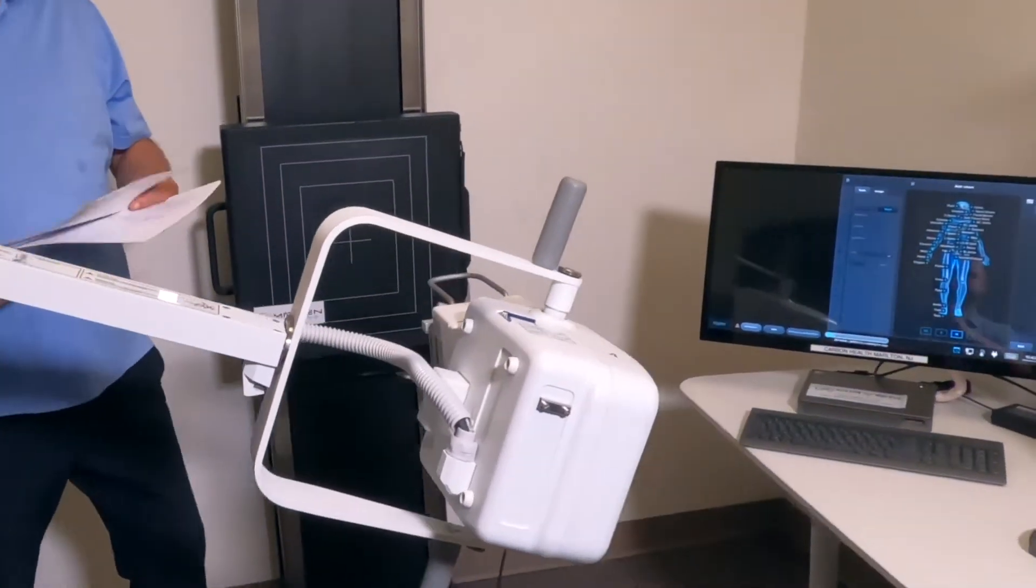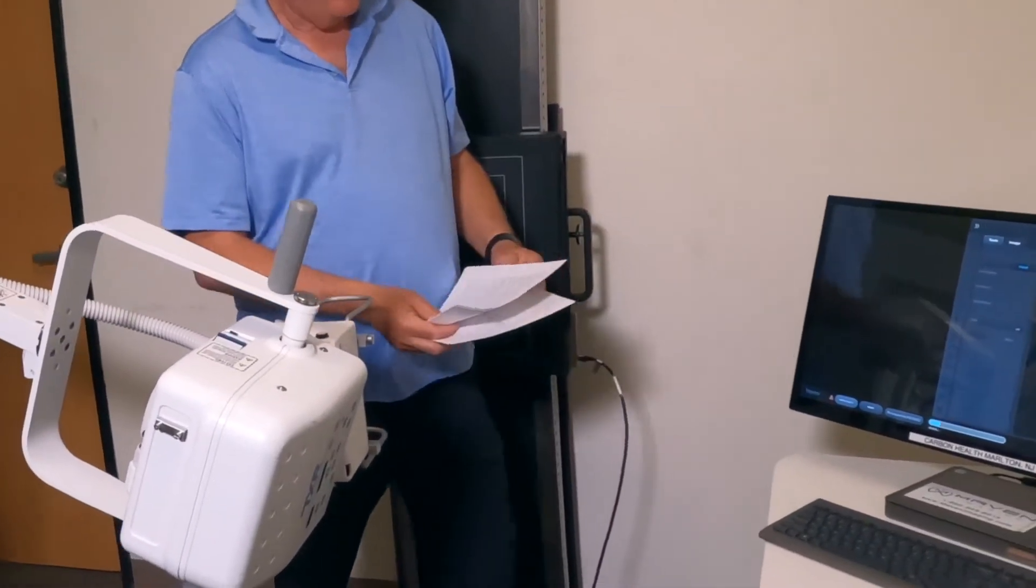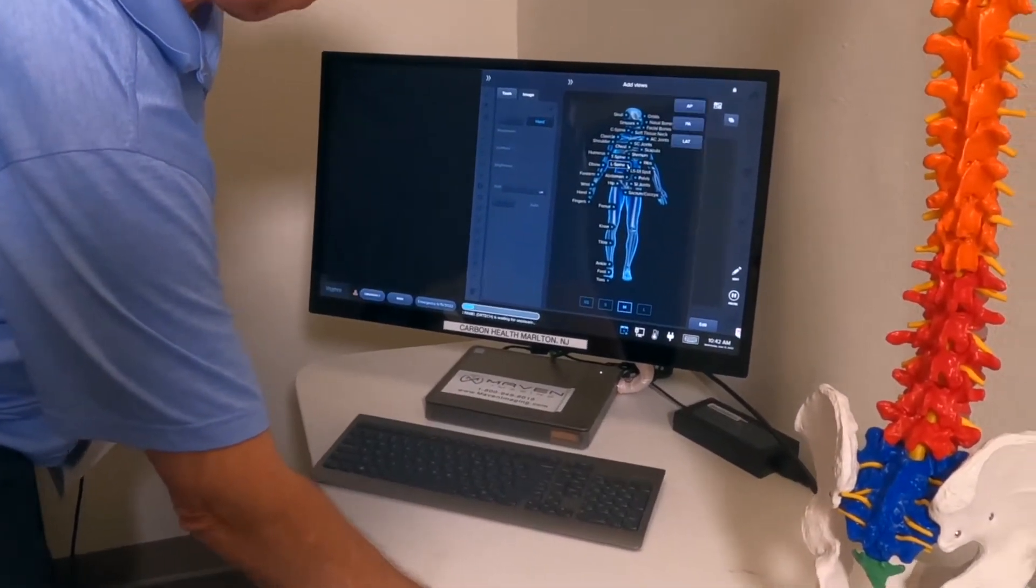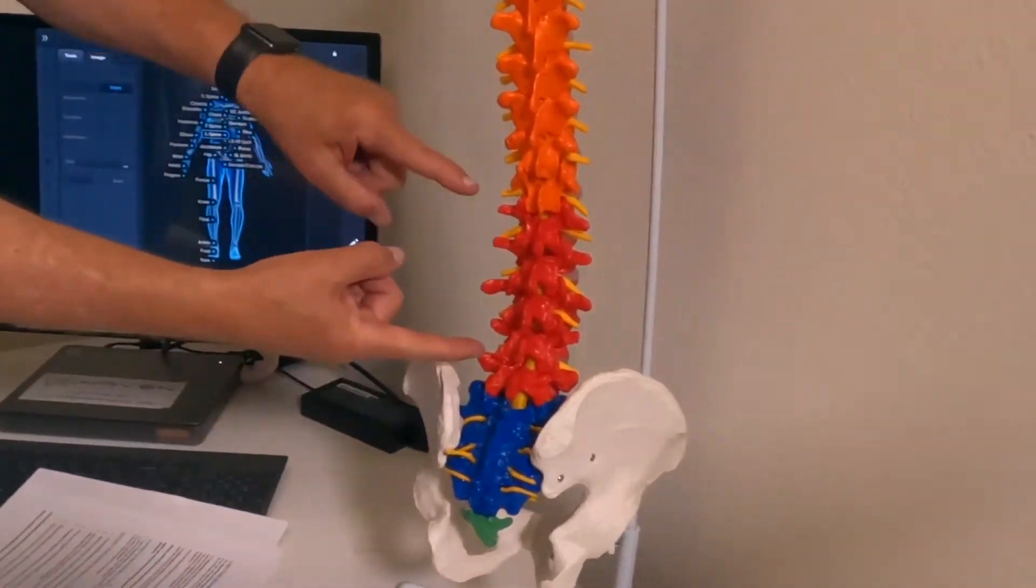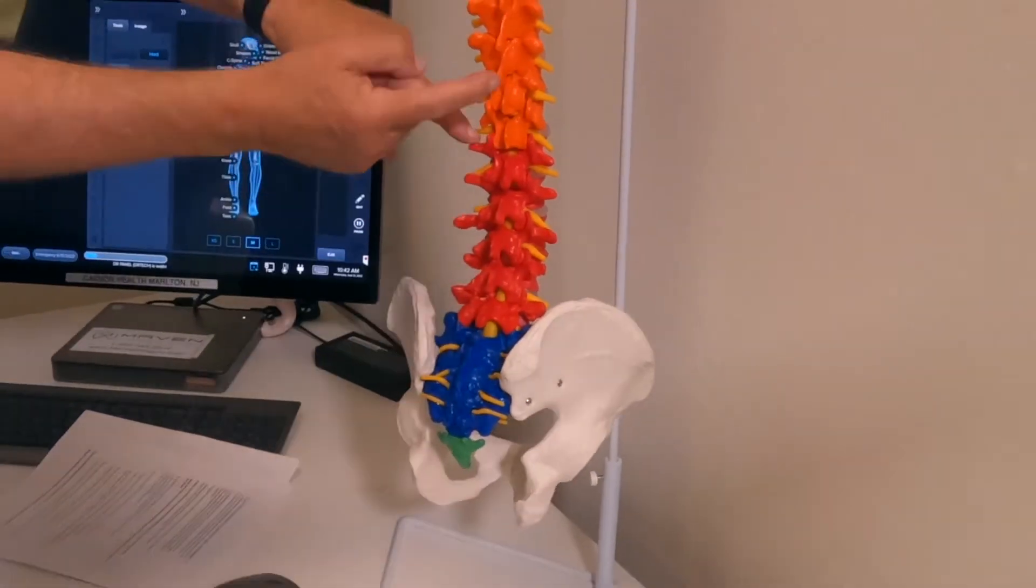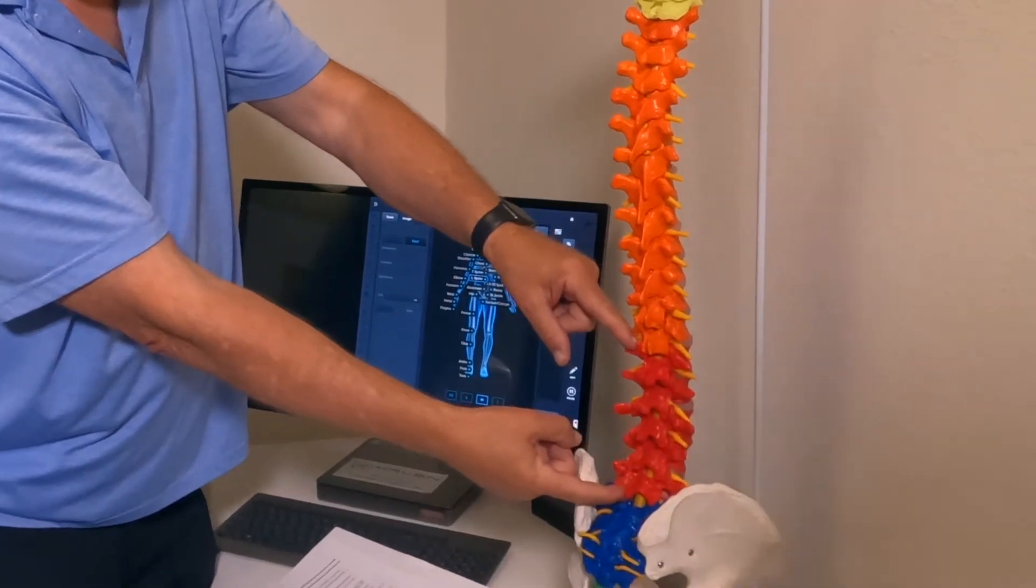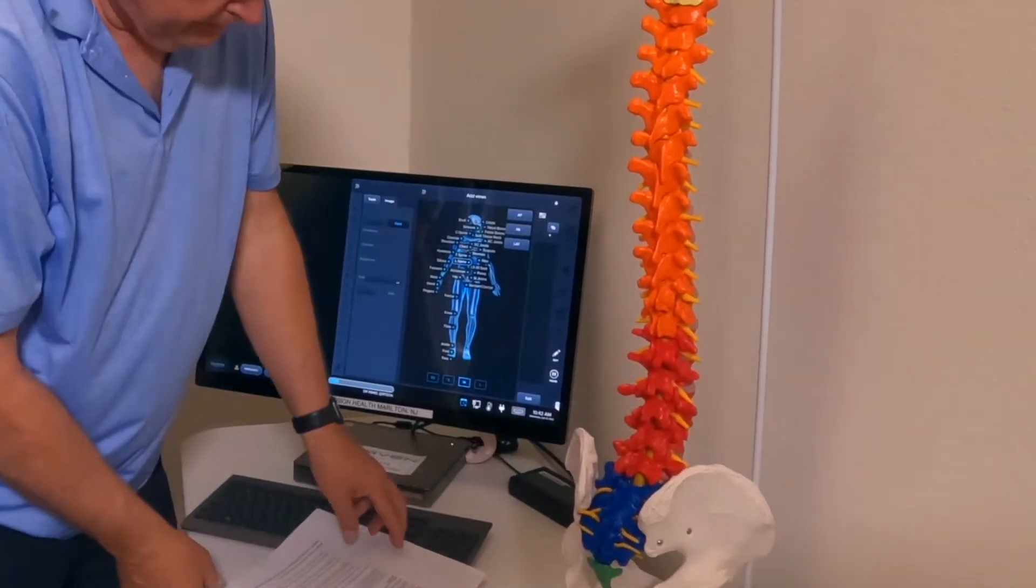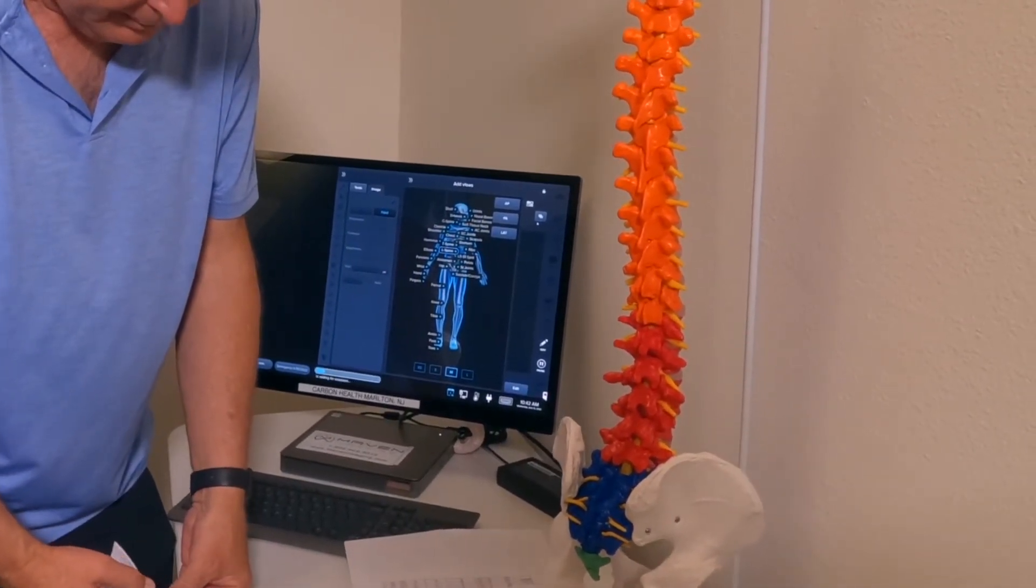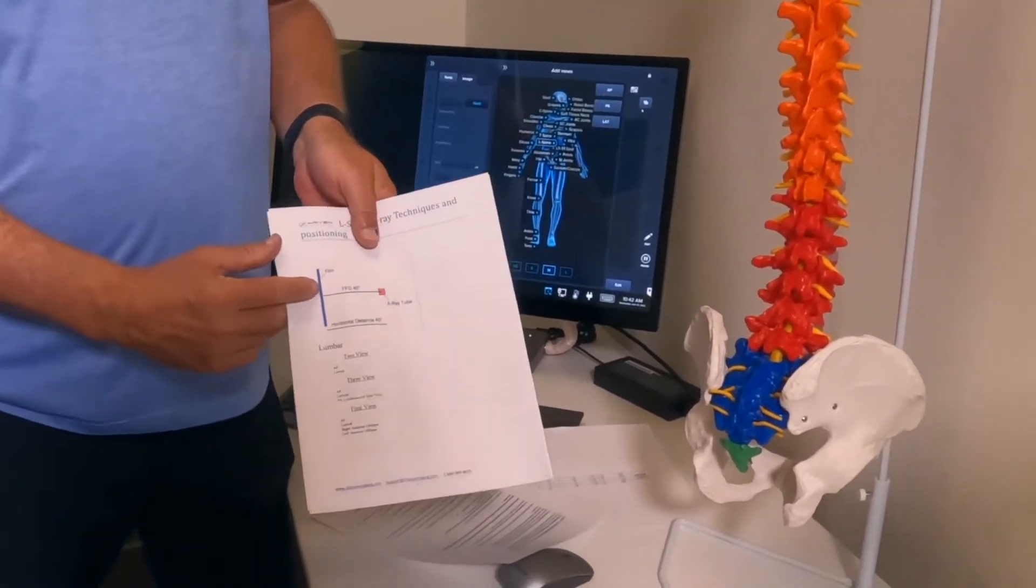Now we're going to select the L-spine. The L-spine is this part of the human spinal column. You have C-spine, T-spine, and L-spine. When you're shooting an x-ray for the L-spine and you're doing an AP shot, we have a little diagram that we're doing for you this morning.